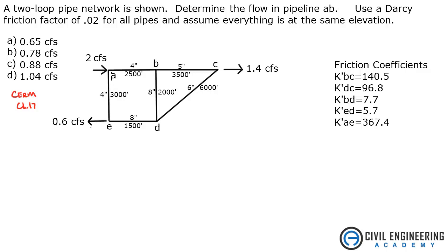As part of the Hardy Cross method, we've got to guess — we have to assume what the flow rates are in each of these pipelines. We have two different networks: A-B-D-E is one loop, and B-C-D is another. Based on K values and friction coefficients, I'm going to estimate. I'll say pipeline AB is 0.9 CFS flowing this way, and AE is 1.1 CFS flowing this way.